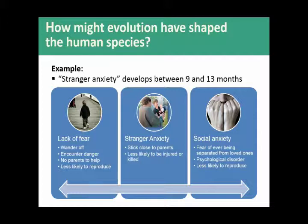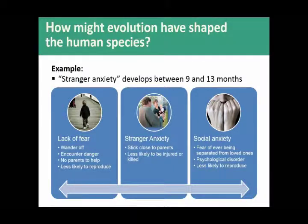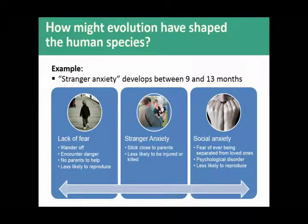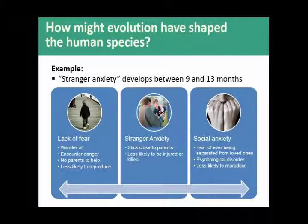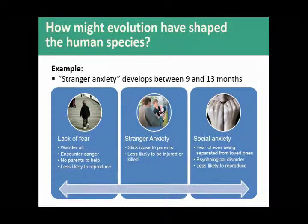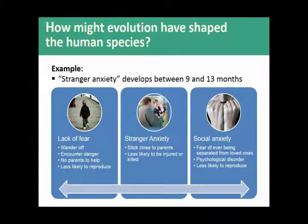Those who have too much stranger anxiety will continue to behave this way well past the period when it's beneficial. By the school years or certainly by your teens, you're supposed to be able to be separated from your loved ones. Not being able to do that is a sign of a psychological disorder — and again, less likely to reproduce because you'll stay with your family of origin and never get out into the gene pool. So stranger anxiety has its benefits, but gone too far one way it can be harmful, and too much lacking, it can also be harmful.